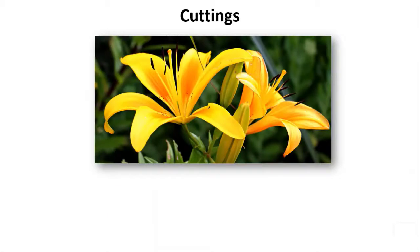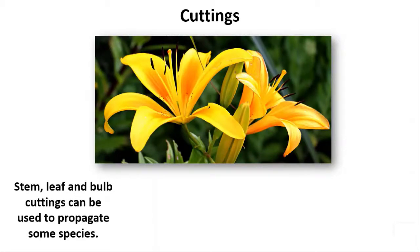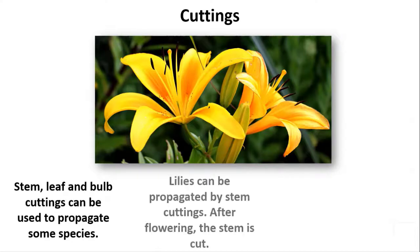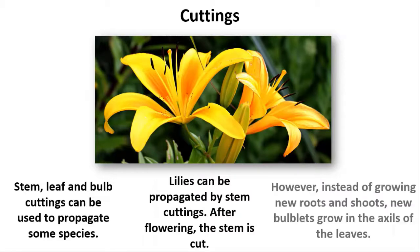Cuttings. Stem, leaf, and bulb cuttings can be used to propagate some species. Lilies can be propagated by stem cuttings. After flowering, the stem is cut. However, instead of growing new roots and shoots, new bulblets grow in the axils of the leaves.